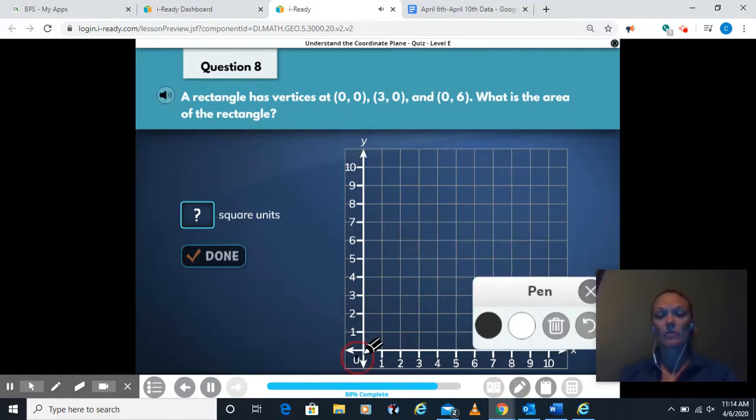0, 0. Put a dot there. 3, 0. Over 3. Stay on 0. 0, 6. Stay on 0. Go up 6.